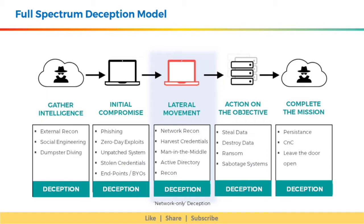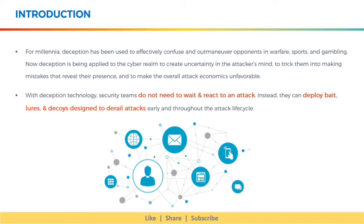For millennia, deception has been used to effectively confuse and outmaneuver opponents in warfare, sports, and gambling. Now deception is being applied to the cyber realm to create uncertainty in the attacker's mind, to trick them into making mistakes that reveal their presence, and to make the overall attack economics unfavorable. With deception technology, security teams do not need to wait and react to an attack. Instead, they can deploy bait, lures, and decoys designed to derail attacks early and throughout the attack life cycle.